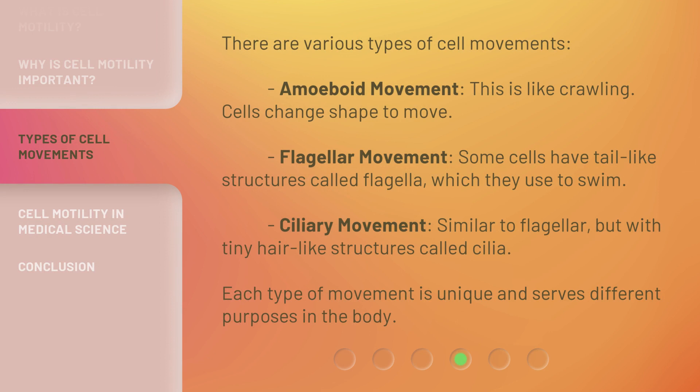There are various types of cell movements. Amoeboid movement: this is like crawling — cells change shape to move. Flagellar movement: some cells have tail-like structures called flagella, which they use to swim. Ciliary movement: similar to flagellar, but with tiny hair-like structures called cilia. Each type of movement is unique and serves different purposes in the body.